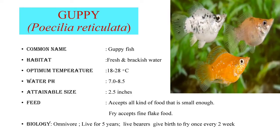We are going to see the most lovable ornamental fish by most people, which is called Guppy. The scientific name of this guppy fish is Poecilia reticulata. The common name is guppy fish. It is noted to be present in fresh and brackish water. The optimum temperature required is 18 to 28 degrees C. The normal pH of the water should fall between 7.0 to 8.5. It attains a maximal size of about 2.5 inches. It accepts all kinds of food that are small enough, and fry accepts flaked food. Basically, this guppy fish is an omnivore which lives for 5 years. It is a live bearer which gives birth to fry once every 2 weeks.